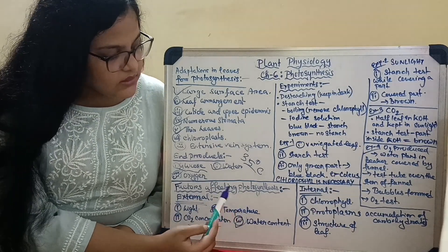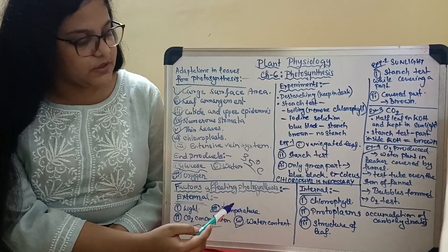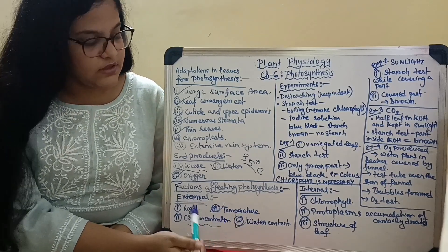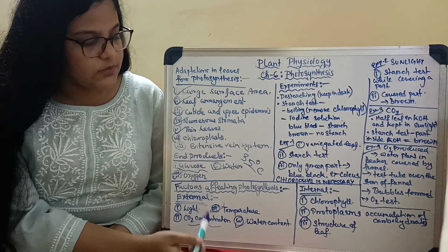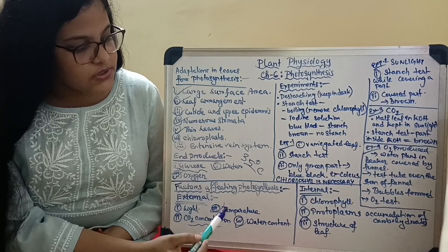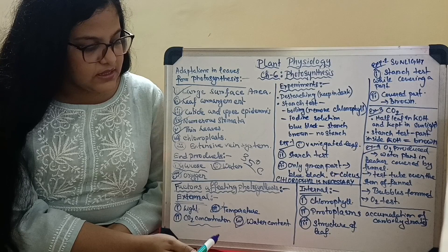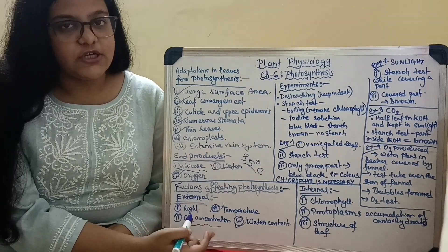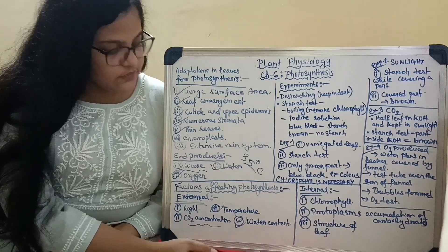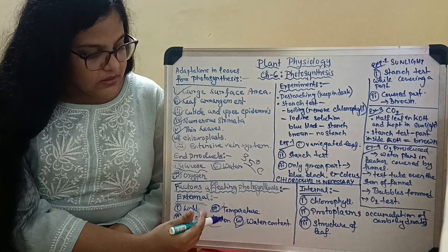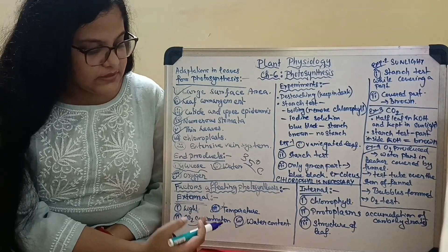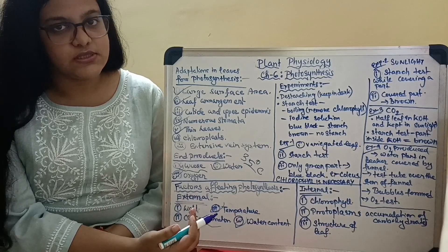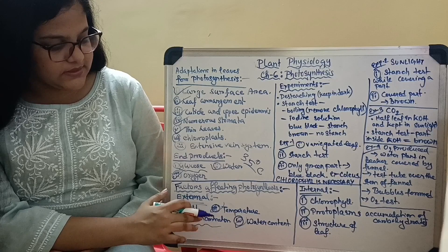Now what are the internal factors? The internal factors include the presence of chlorophyll — we have already discussed its function in relation to photosynthesis. Next comes the protoplasm: if the protoplasm of the guard cell dries up, photosynthesis will not be able to take place since the guard cell will be closed. Also, accumulation of carbohydrate in the guard cells will stop photosynthesis since there will be no space for glucose production. Next comes the structure of the leaf, which is arranged to properly receive sunlight and CO2 for better photosynthesis.